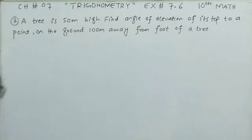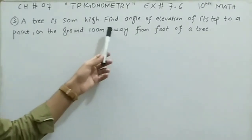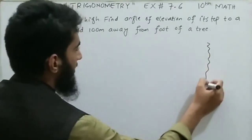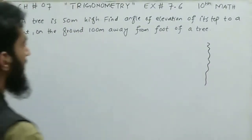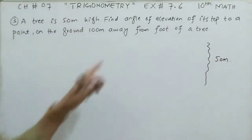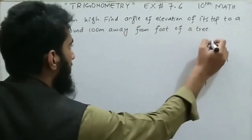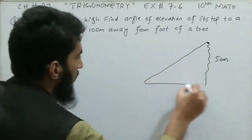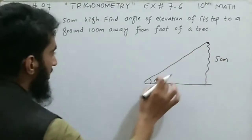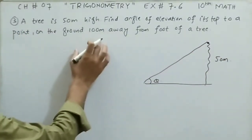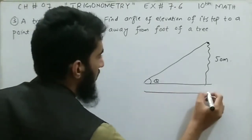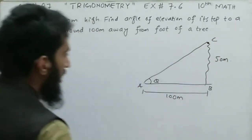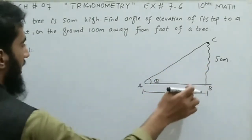Question number 3 related with the same Exercise 7.6: A tree is 50 meters high. Find the angle of elevation of its top from a point on the ground 100 meters away from the base of the tree. The height of the tree is 50 meters and the distance on the ground is 100 meters. Let's label point A, B, and C. We will use tangent theta because perpendicular and base are given.